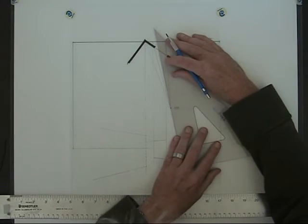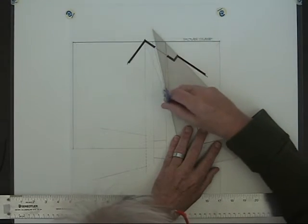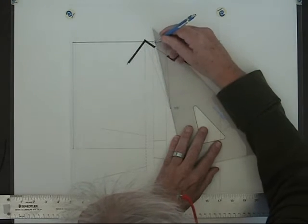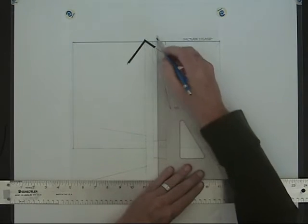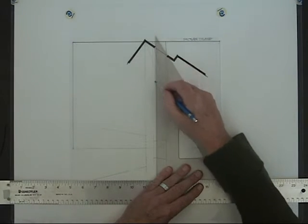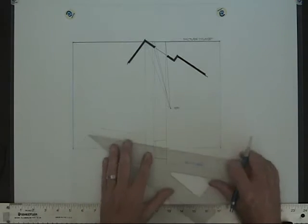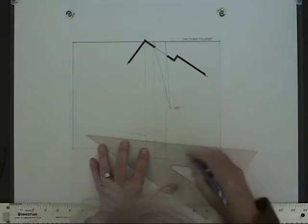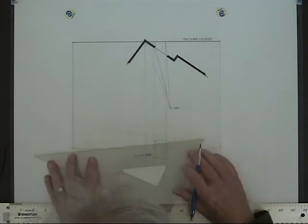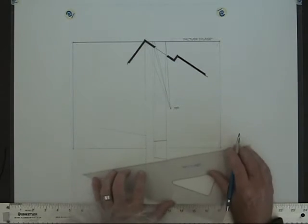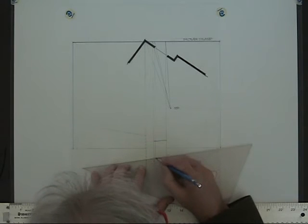There's the window. Now to show the depth of the window from the station point through the rear of the window, I will draw another light guideline. And then drop that line from the station point down to my perspective. And I can now fill in the depth of the window. There's the top and the bottom coming from the right vanishing point.